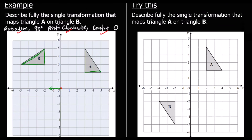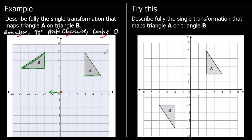Here's one for you to try. Describe the transformation that maps triangle A onto triangle B. Again, it is a rotation. The first bit of information we need is rotation. How far has it turned? This is 180 degrees — it's half a turn. We don't have to give clockwise or anticlockwise because it would be the same both ways.